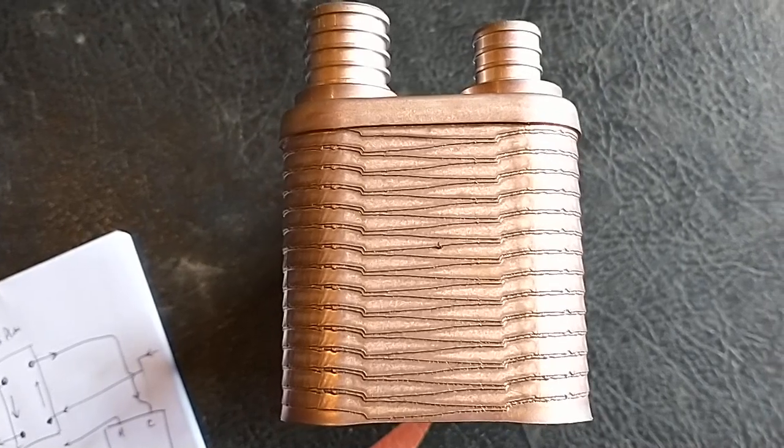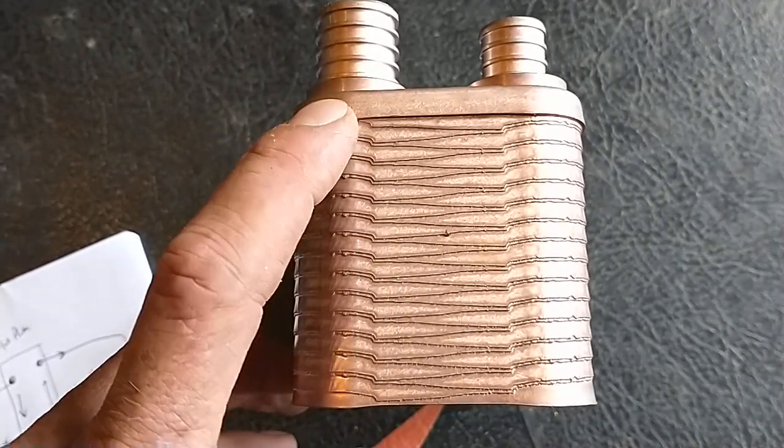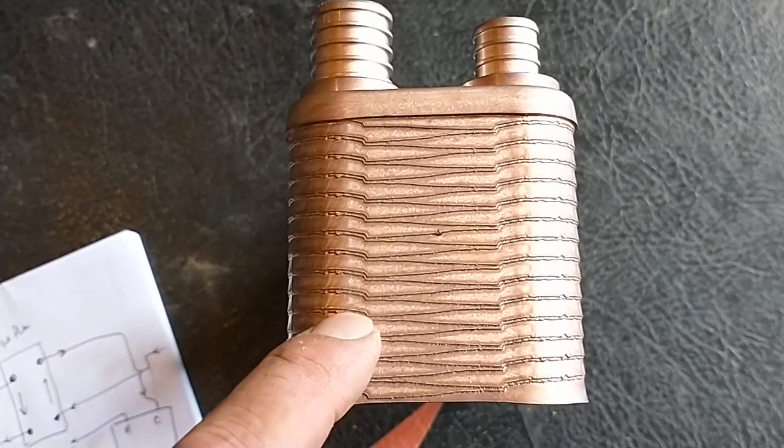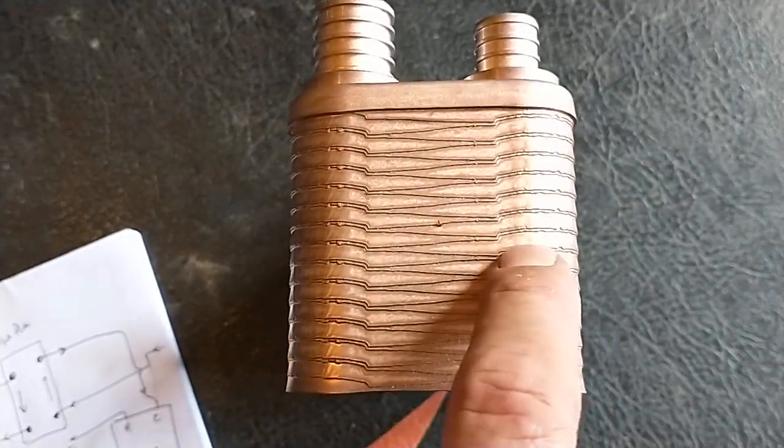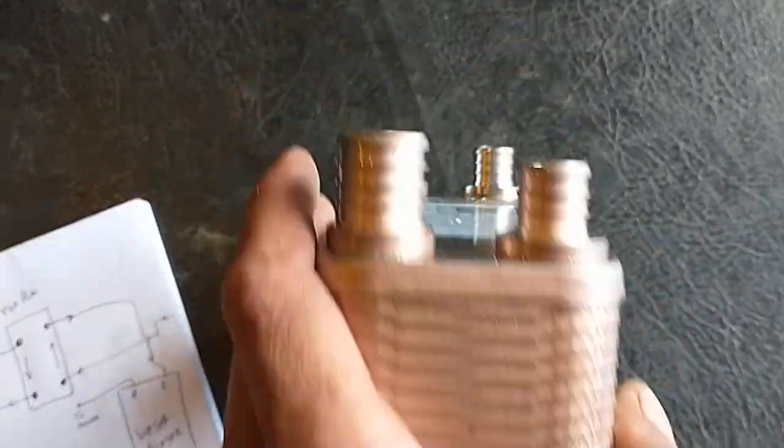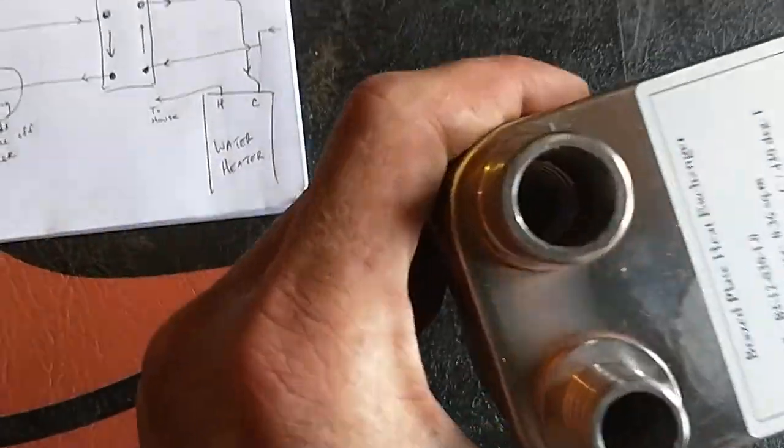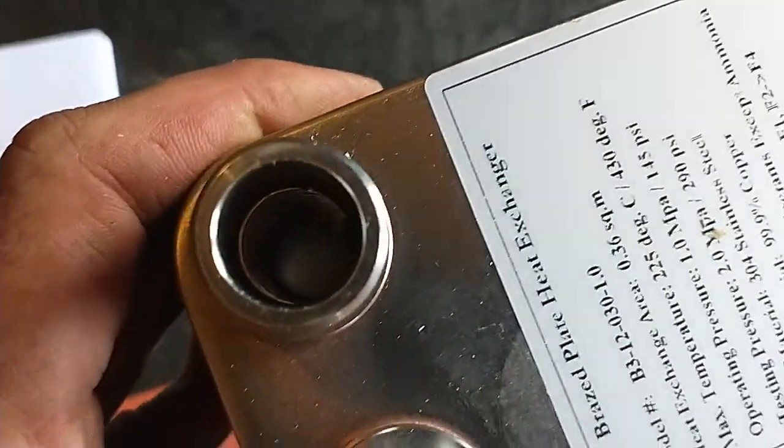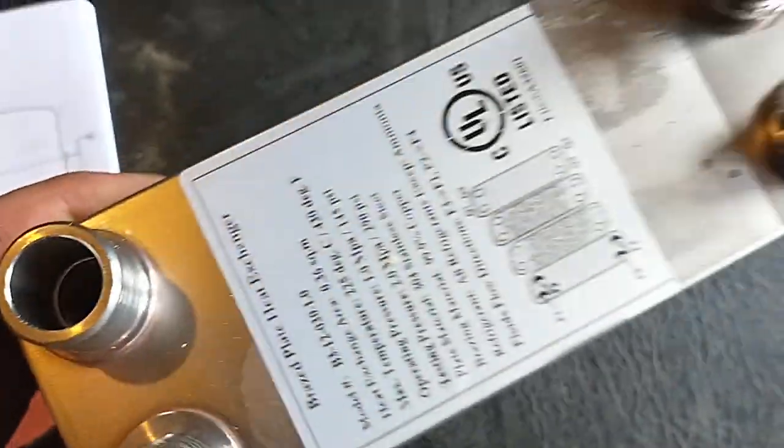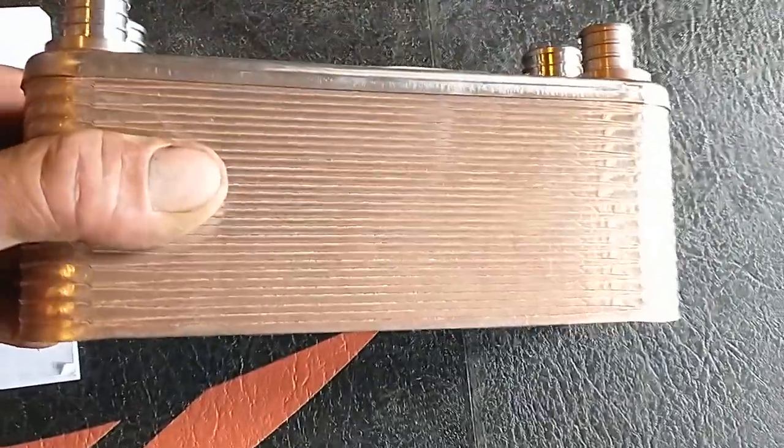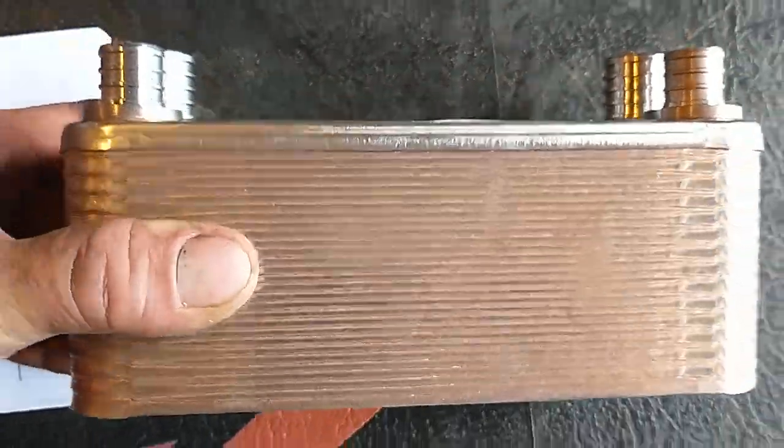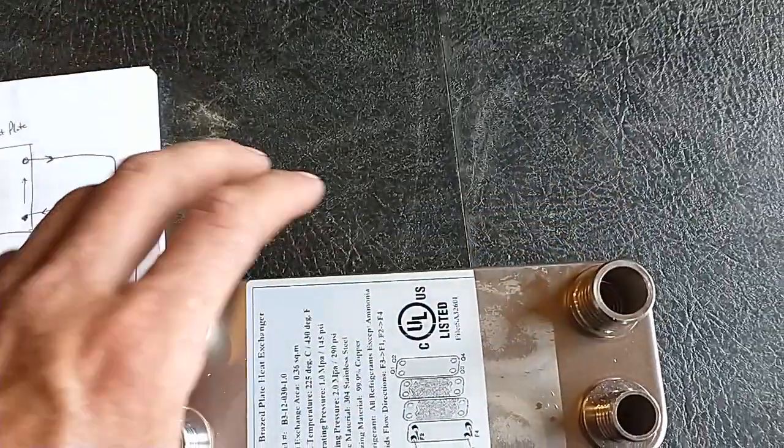If you look at the end here, you can see how the plates are brazed together, separating every other space for the furnace water and every other space for your domestic water. So they flow in the spaces but they don't actually mix. You can see some of the fins down inside there. There's a side view of all the plates brazed together, so it's an excellent little on-demand water heater.